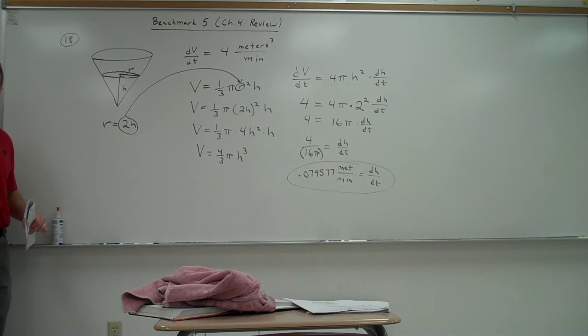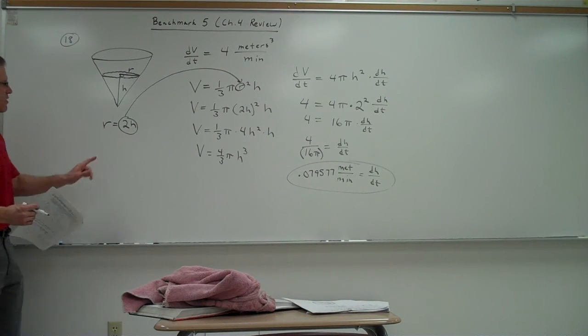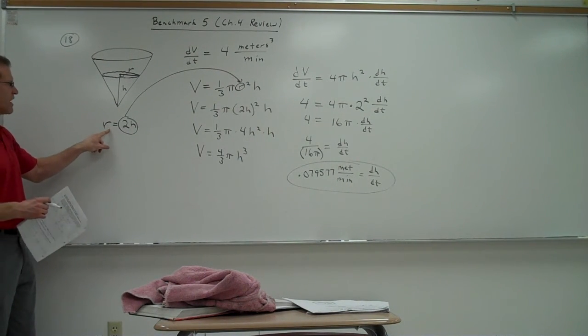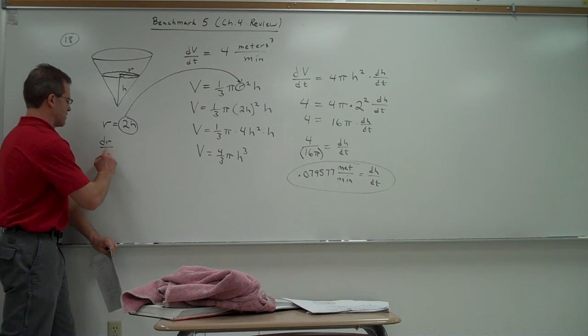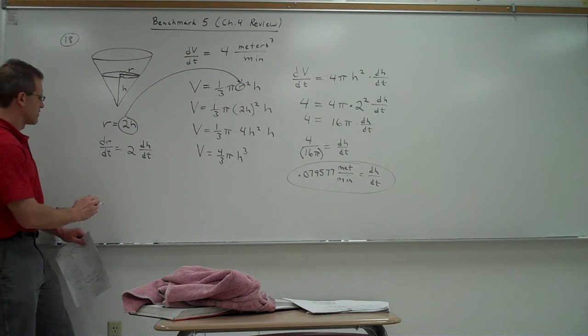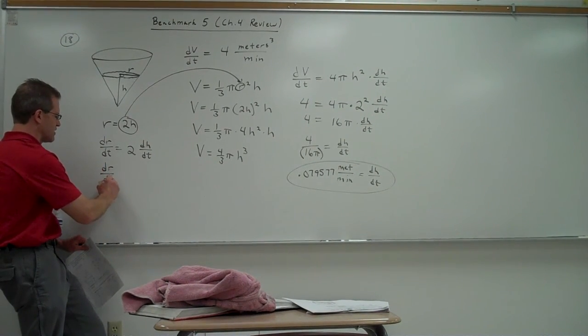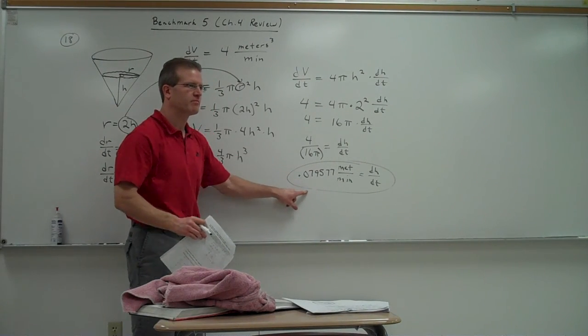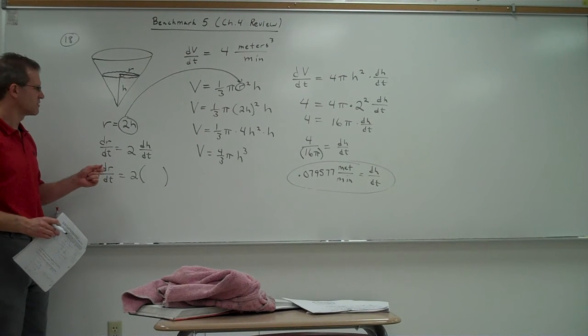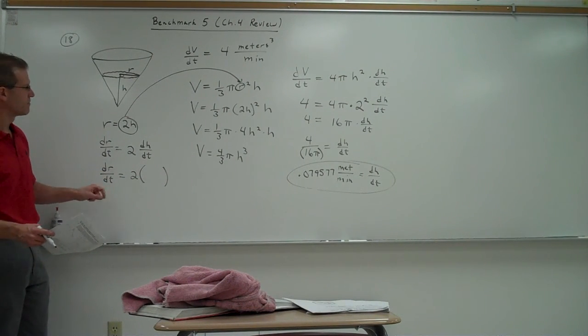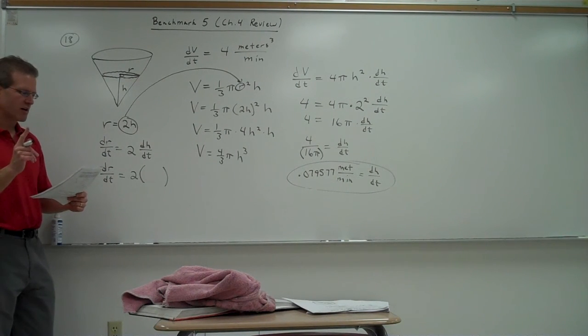Anyone have any questions about that problem? What if there was a second part to the problem that said find how fast the radius is changing? What can I do with this expression right here if I want to know how fast the radius is changing? Do the derivative of that. Yep. So the derivative of r would be dr dt equals derivative of 2h would be 2 times derivative of h should be dh over dt. And so to find how fast the radius is changing, which is called dr over dt, you would just take 2 times your previous answer, your dh dt, multiplied by 2. Okay? In other words, the radius is changing twice as fast as the height is changing. Whatever 2 times 0.079577 would be, that would tell you how fast your radius is changing at that one instant in time when the water is 2 meters deep.